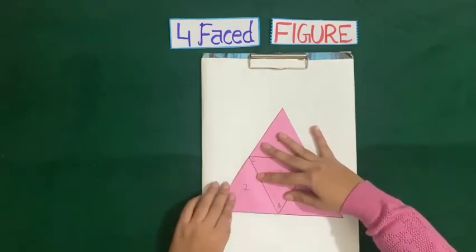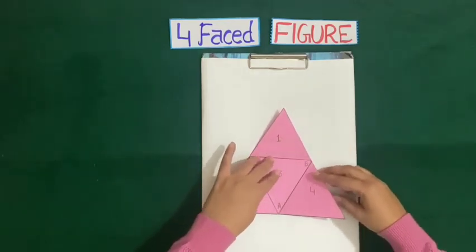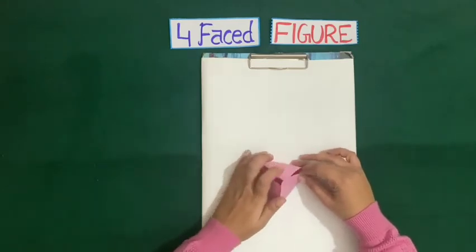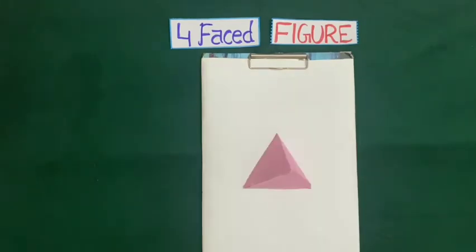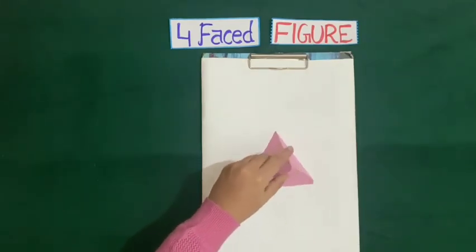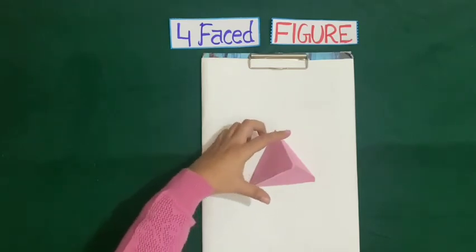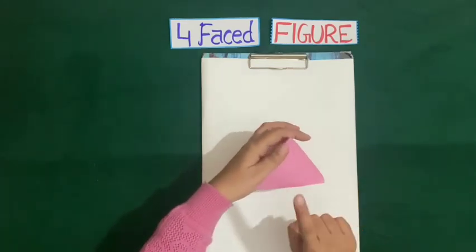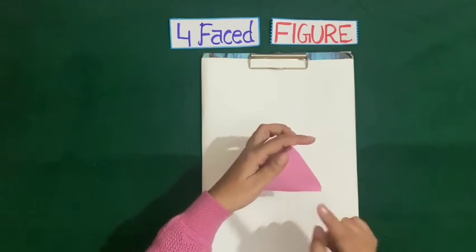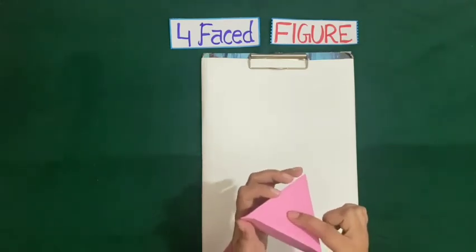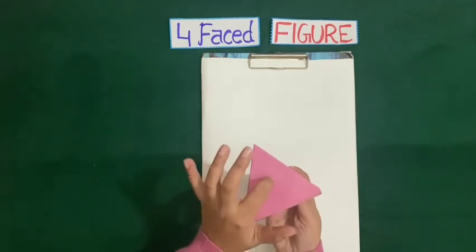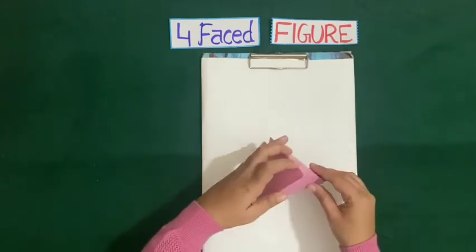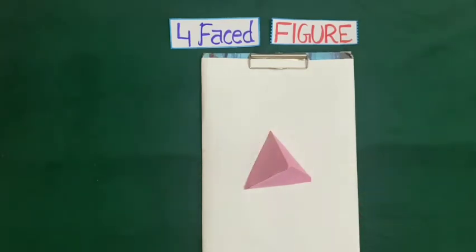Now we have made a pyramid. So this is the pyramid we have formed. Now let us count the faces of this pyramid: one face, second face, third face and fourth face. So this is a four-faced figure.